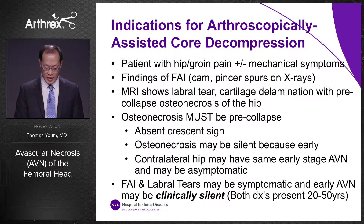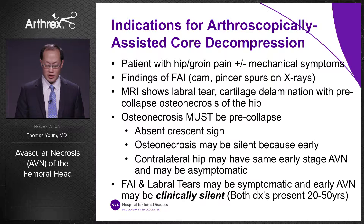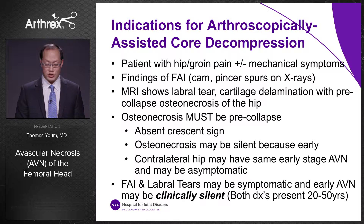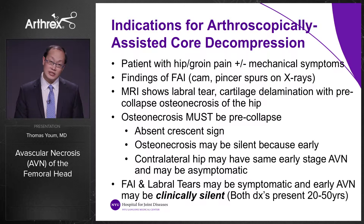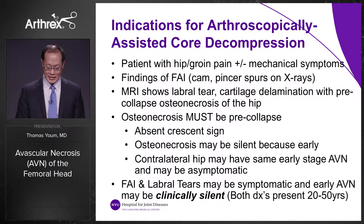The indications include a patient with hip or groin pain plus or minus mechanical symptoms, findings of FAI on x-rays with cam and pincer spurs, and MRI showing a labral tear or cartilage delamination with pre-collapse osteonecrosis of the hip. The osteonecrosis must be pre-collapsed — meaning no crescent sign — for core decompression to work. The osteonecrosis is likely silent and asymptomatic because it is early, while the FAI and labral tears tend to be the source of symptomatic pain.